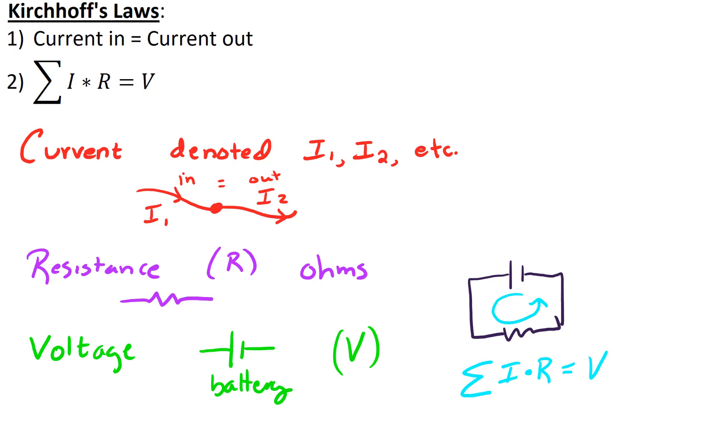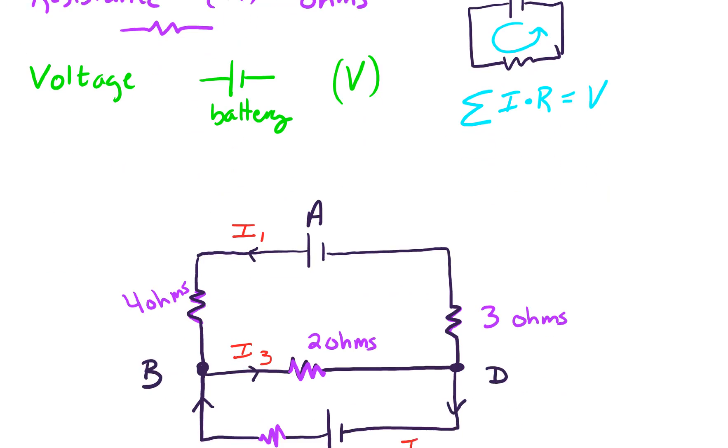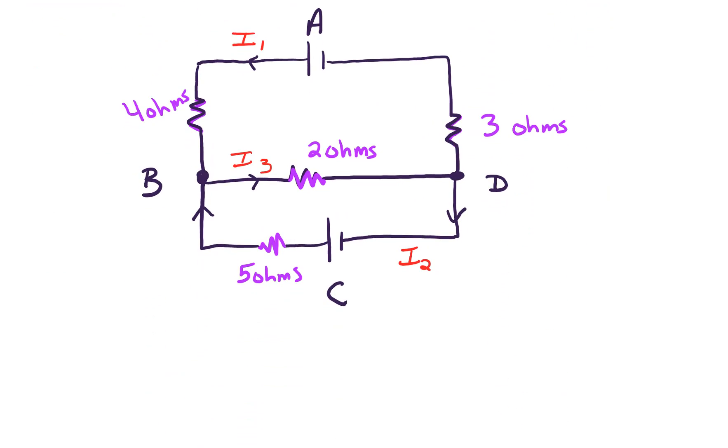So let's use those two laws for a particular example. So here's an example. Here's an electrical network, and we've got A, B, C, and D. So at A, we've got volts, and let's label that with 24 volts for this particular problem.